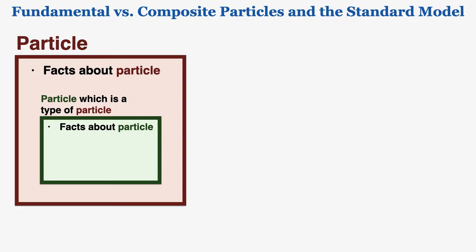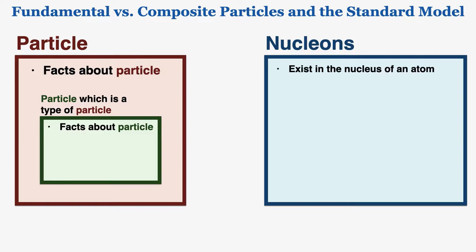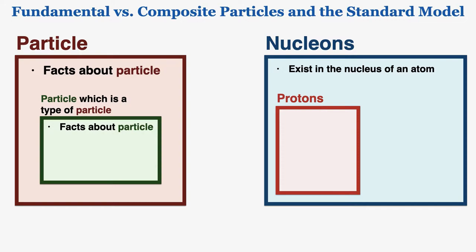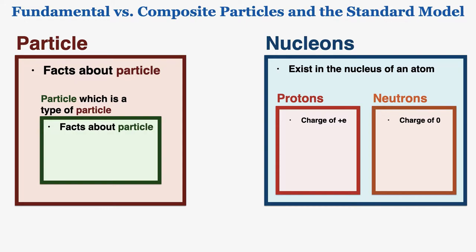As an example using particles you're already familiar with: nucleons exist in the nucleus of an atom. One type of nucleon is a proton, which has a charge of positive e, and neutrons have a charge of zero. This is how I'll use this visual system to display facts about particles.